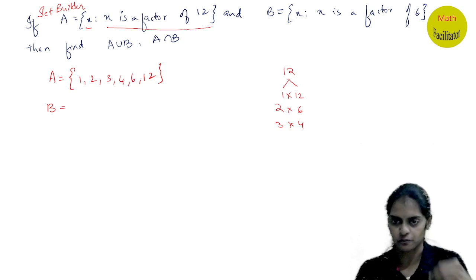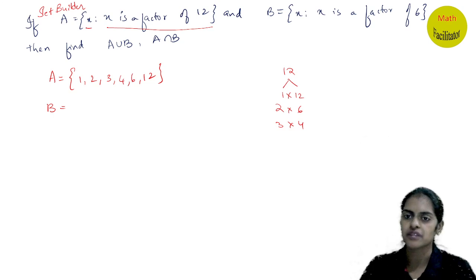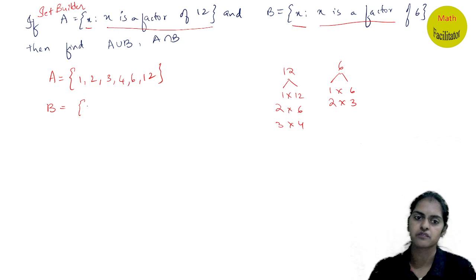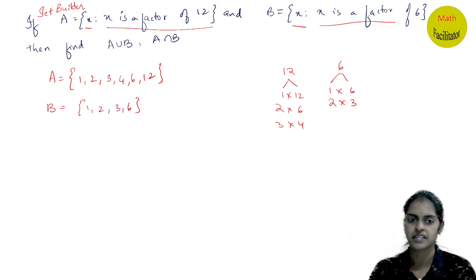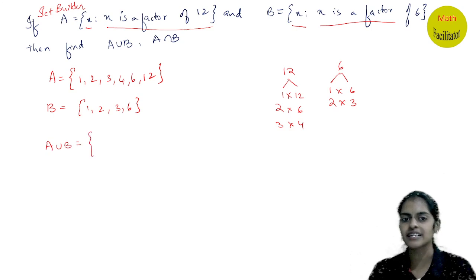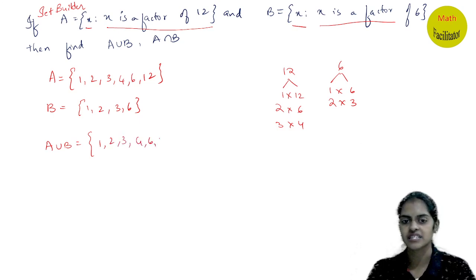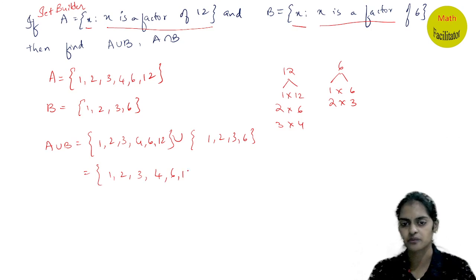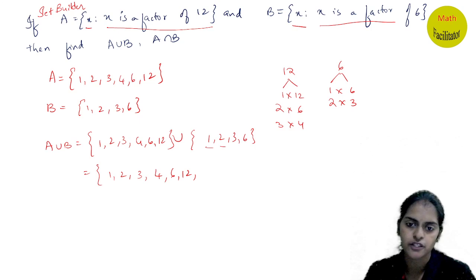B is a set of elements containing x such that x is a factor of 6. Factors of 6: 1 × 6, 2 × 3, so B = {1, 2, 3, 6}. Now to find A union B, you write all elements. A has {1, 2, 3, 4, 6, 12} and B has {1, 2, 3, 6}. In the union, elements already written are not repeated.